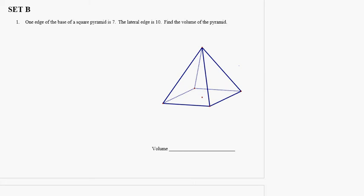The edge of the base of a square pyramid is 7. The lateral edge is 10. So the edge of the base is these edges right here. It's a square pyramid, so they're all 7.